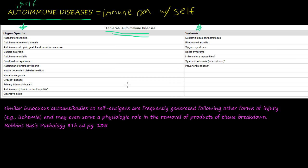That might sound counterintuitive, but we don't know exactly what's going on in these diseases, especially the ones with the asterisks. They are not 100% confirmed. For example, with polyarteritis nodosa, part of the disease is vasculitis.